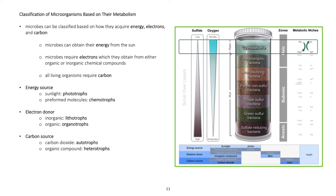Classification of microorganisms based on their metabolism: Microbes can be classified based on how they acquire energy, electrons, and carbon. Microbes can obtain their energy from the sun or require electrons which they obtain from either organic or inorganic chemical compounds. All living organisms require carbon. Energy source: sunlight - phototrophs, preformed molecules - chemotrophs. Electron donor: inorganic - lithotrophs, organic - organotrophs. Carbon source: carbon dioxide - autotrophs, organic compound - heterotrophs.